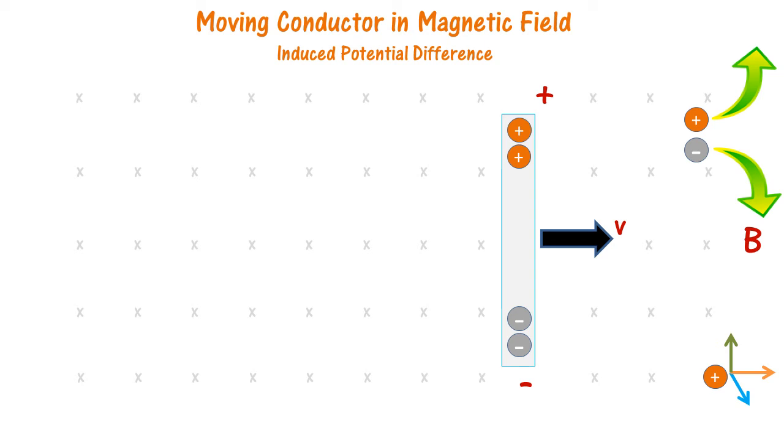So this now behaves like a battery with an EMF, and its EMF or voltage is equal to BVL, where L is the length of the moving conductor, V is its velocity, and B is the magnetic field.